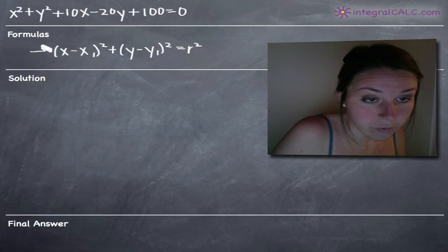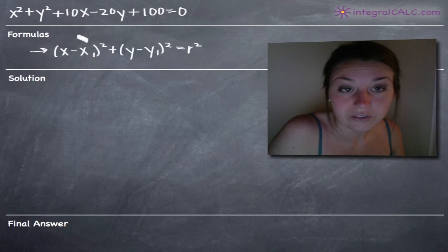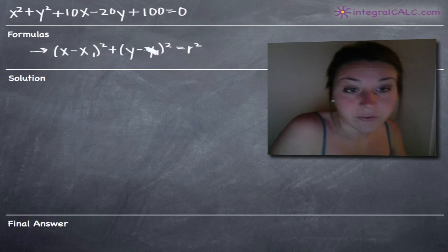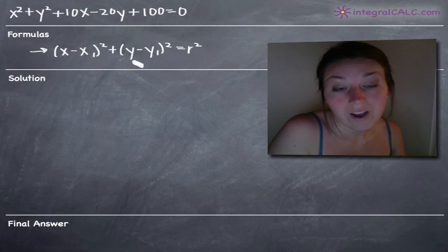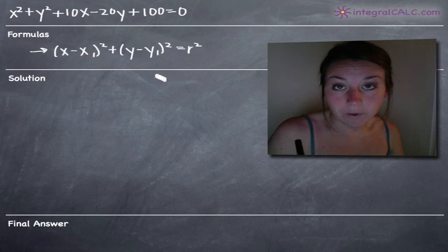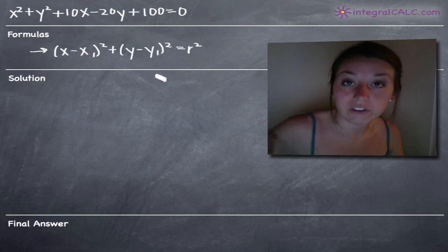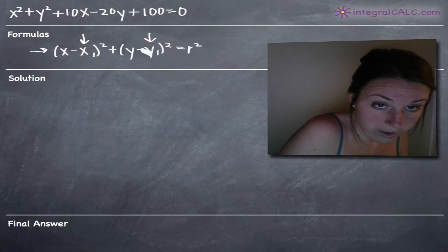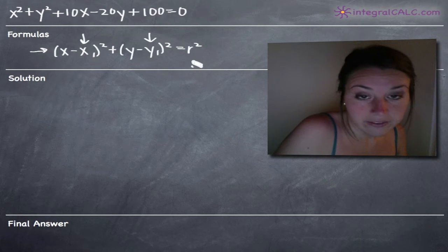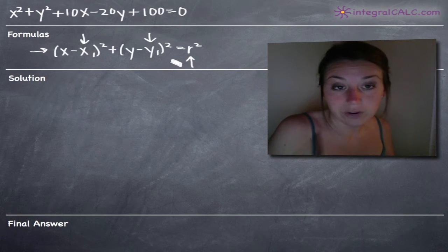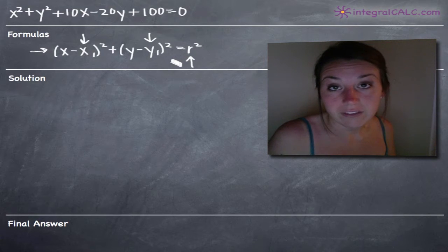We're going to be using this formula here for the equation of a circle. What we want to do is transform our equation into an equation that matches the one in the formulas section here. Then we're going to take information out of this formula that we'll need to sketch the graph of the circle. The information we need is the center point coordinates and the radius.